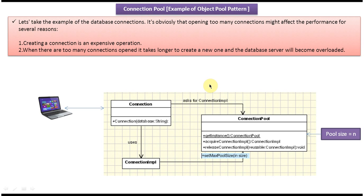Why do we need this connection pool? Let's take the example of a connection object. Creating a connection object is always a costly operation. If too many connections are opened in the database and then a new request comes to create a new connection object, it will take more time. Plus the database server will be overloaded and it affects the performance of the application.